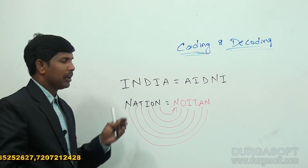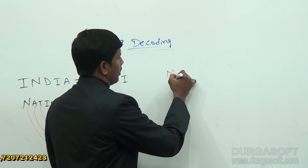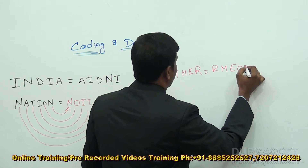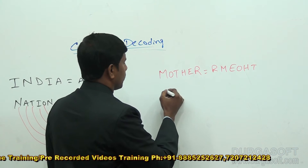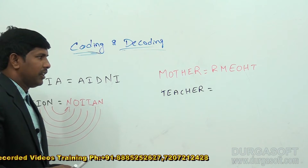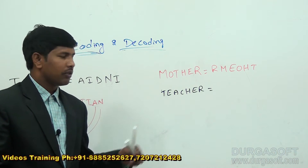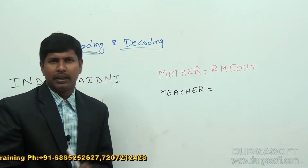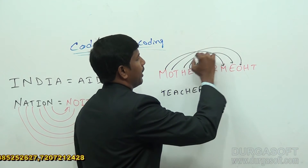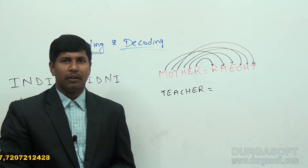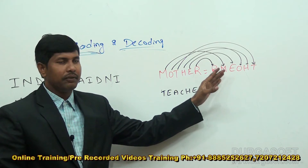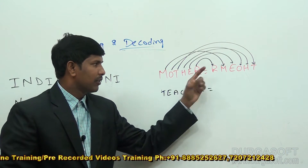Sometimes mother is given as R-M-E-O-H-T, and we need to find the code for teacher. The logic is simple: we are taking the last letter as the first, then the first as the next, then the last-but-one as the next — a last-first alternation. In the same way, we can write teacher as R, T, E, E, H, A, C.